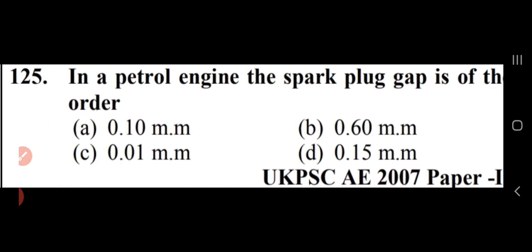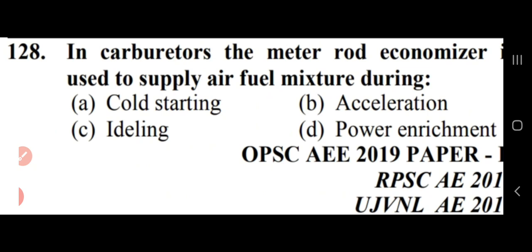In a petrol engine, the spark plug gap is of the order of 0.60 mm — option B. In a carburetor, the metering rod economizer is used to supply air-fuel mixture during power enrichment — option D. An economizer is a valve that remains closed at normal cruise operations and opens to supply rich mixture at full throttle.